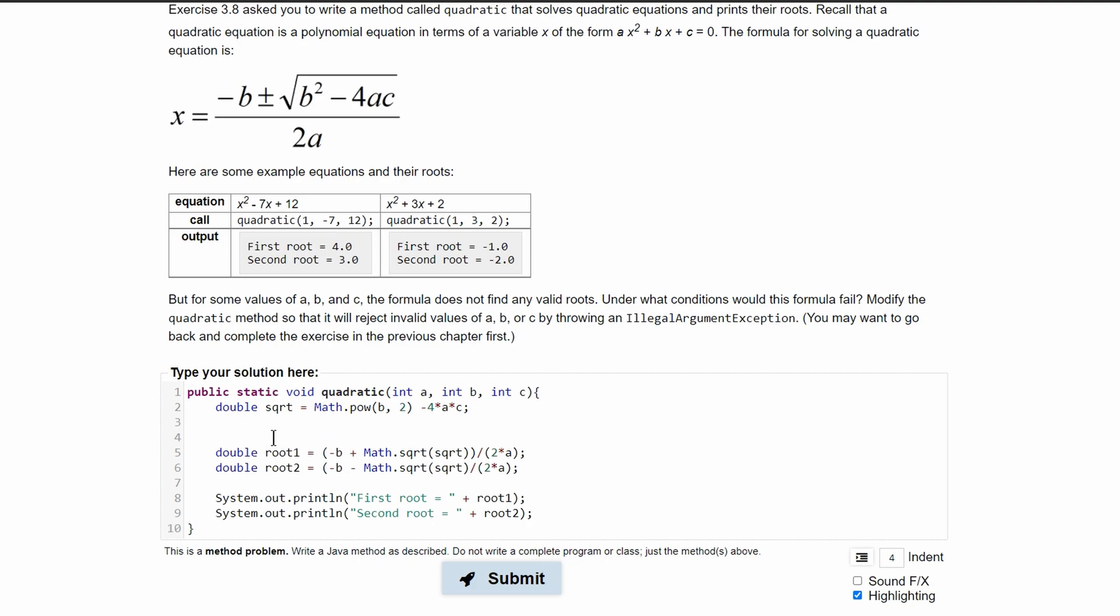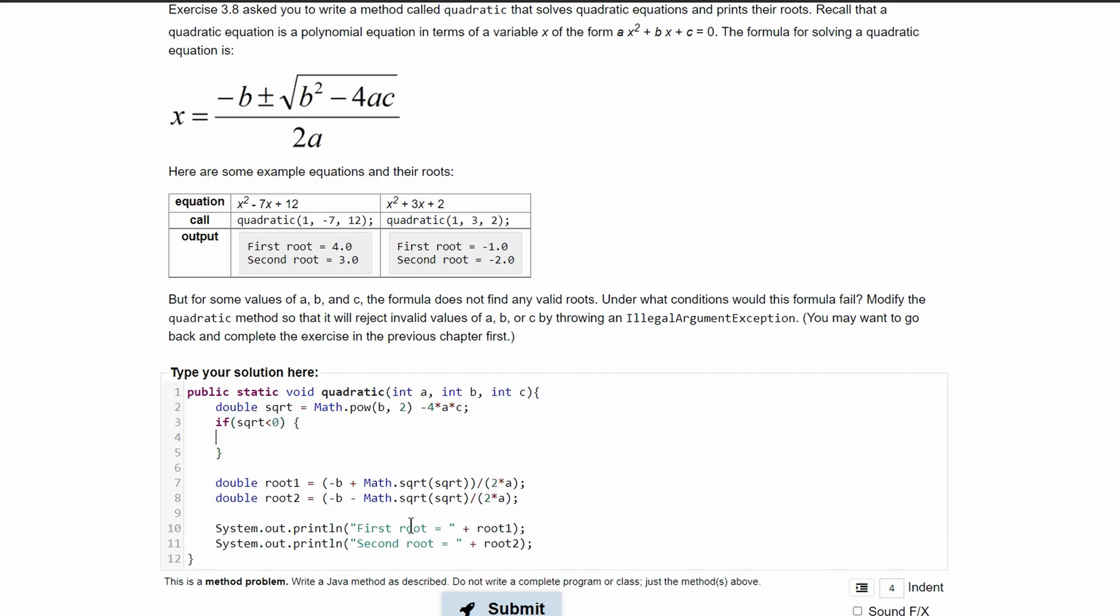We have this for now and then we need our if statement to check if this is negative. So we'll have if square root is less than 0, that means it's negative, we will be inside of this if statement and then we are going to throw a new illegal argument exception.